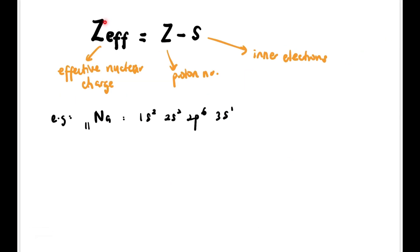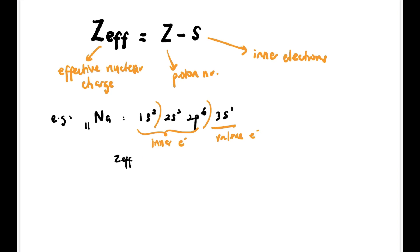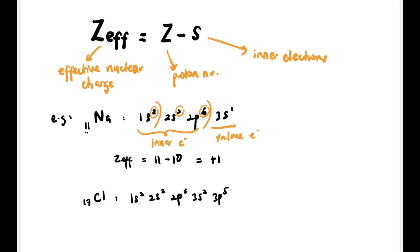Zeff can be calculated using the formula: Zeff = Z minus S, where Zeff is the effective nuclear charge, Z is the proton number, and S is the number of inner electrons. For example, for Na (atomic number 11) with configuration 1s² 2s² 2p⁶ 3s¹, the valence electron is 3s¹ and all other electrons are inner electrons. So Zeff for Na = 11 minus 10 = positive 1.